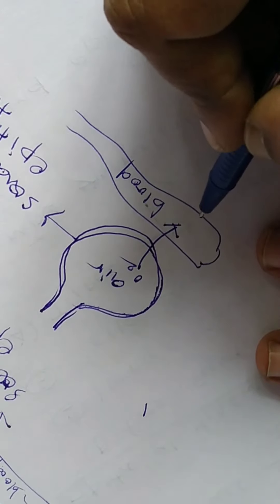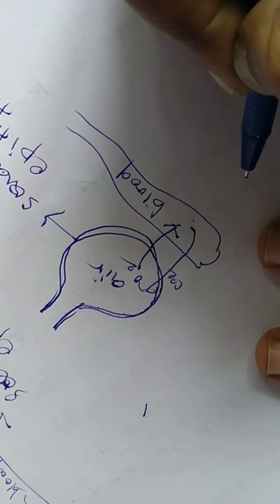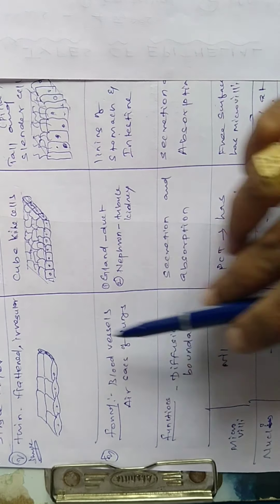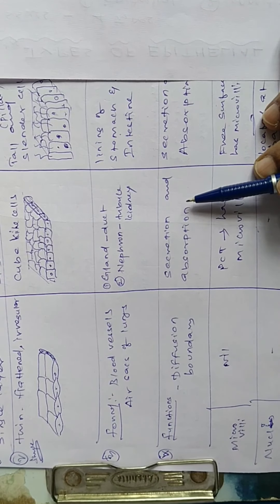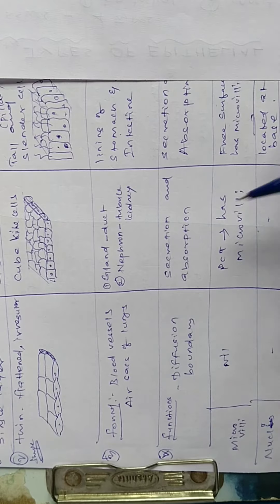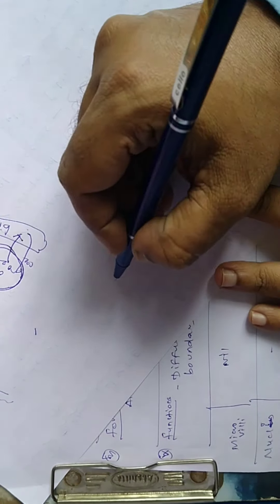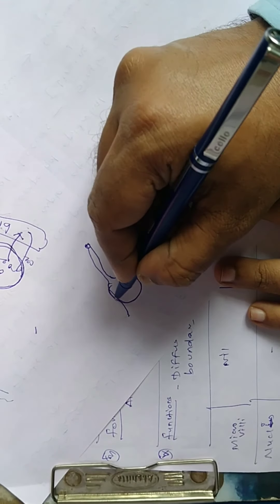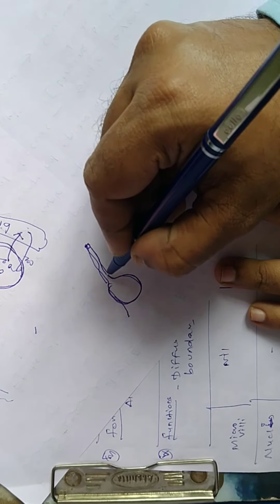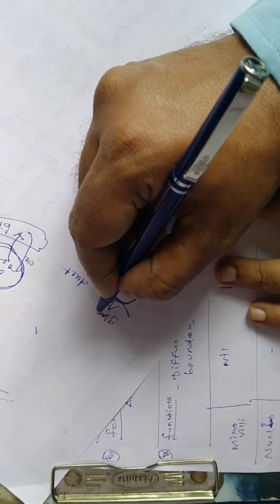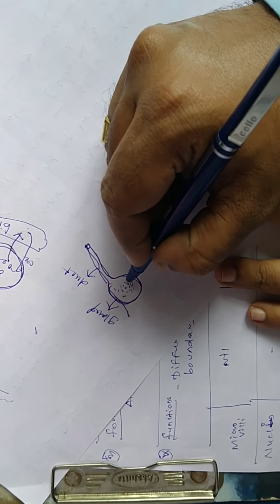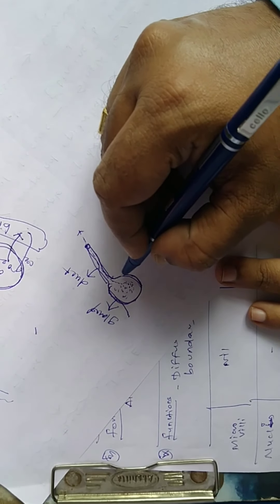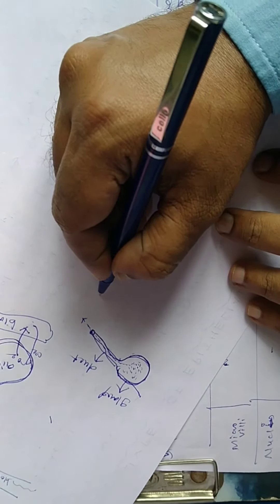From the alveoli, oxygen enters into the blood — diffuses into blood — and from the blood, carbon dioxide diffuses into the alveoli. So squamous epithelium acts as a diffusion boundary — this is the fourth point. In the gland, for example the salivary gland: I have drawn the salivary gland here. This is the gland part and this is the duct part. The gland stores some quantity of secretion and releases it into the duct. This gland part contains cuboidal epithelium.